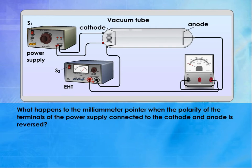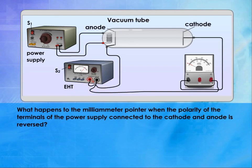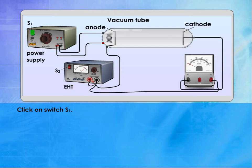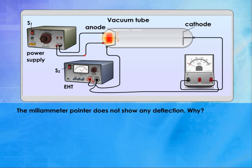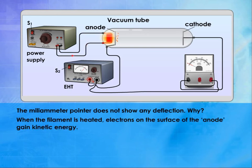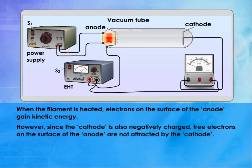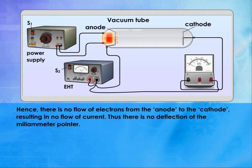What happens to the milliammeter pointer when the polarity of the terminals of the power supply connected to the cathode and anode is reversed? Click on switch S1. Click on switch S2. The milliammeter pointer does not show any deflection. Why? When the filament is heated, electrons on the surface of the anode gain kinetic energy. However, since the cathode is also negatively charged, free electrons on the surface of the anode are not attracted by the cathode. Hence, there is no flow of electrons from the anode to the cathode, resulting in no flow of current. Thus, there is no deflection of the milliammeter pointer.